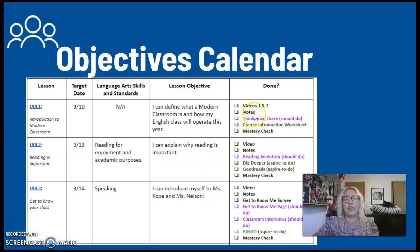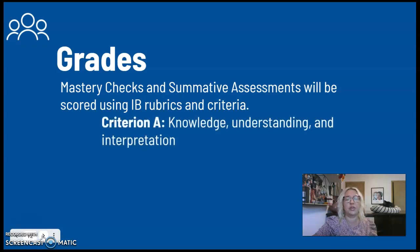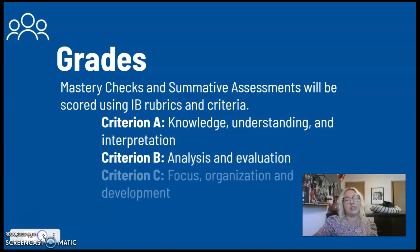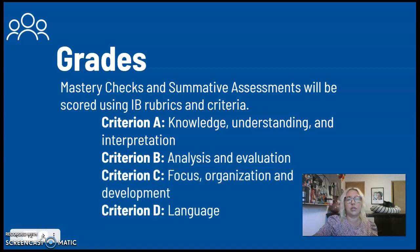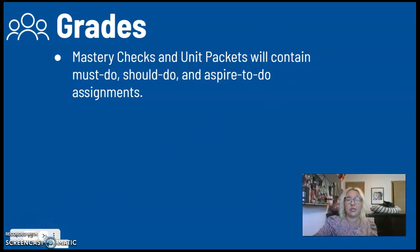The objectives calendar will show you everything you need to do — all the steps in a lesson and all the lessons in a unit. Grades are made up of mastery checks, packet work, and the summative assessment, all scored according to IB rubrics. The IB rubric we're using first semester is the higher level essay rubric: criterion A is knowledge, understanding, and interpretation; B is analysis and evaluation; C is focused organization and development; and D is use of language. The mastery checks and unit packets will contain must-do, should-do, and aspire-to-do assignments.